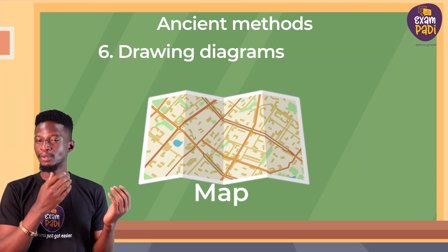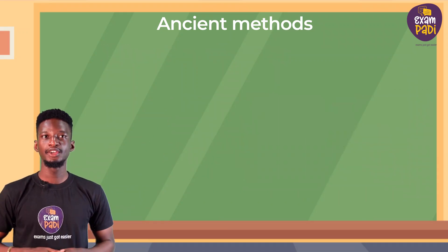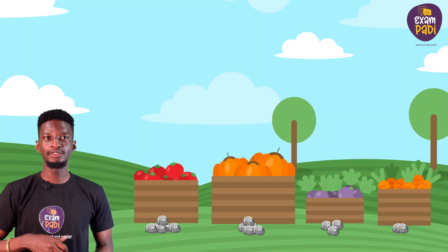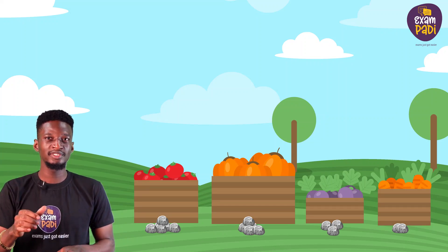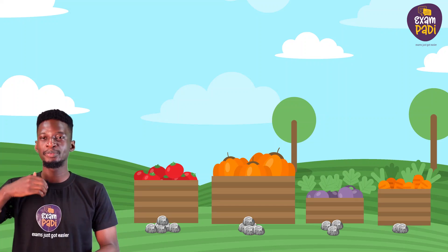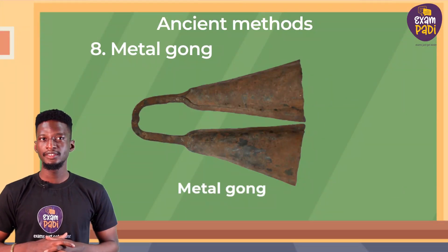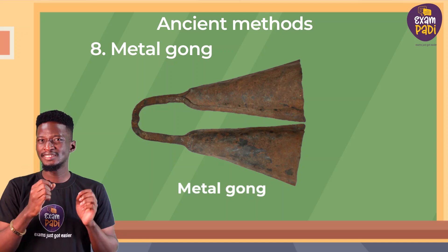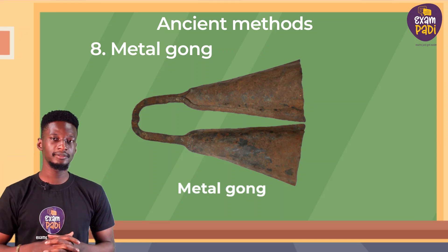Examples include maps and many others. 7. Representation — in the olden days, farmers would leave their farm produce by the roadside unattended and place a certain number of stones beside them to represent the cost of each item. 8. Metal gong — this is a hollow metal object beaten with a stick to make announcements to community members.